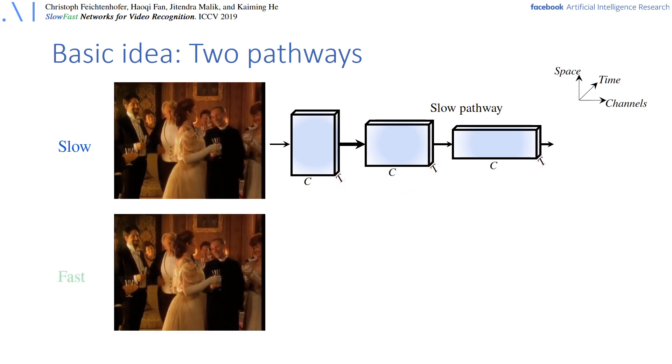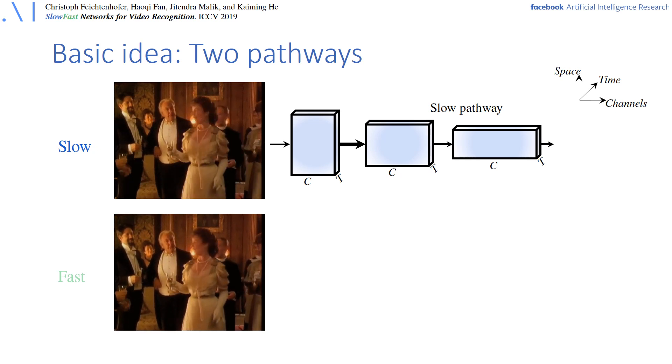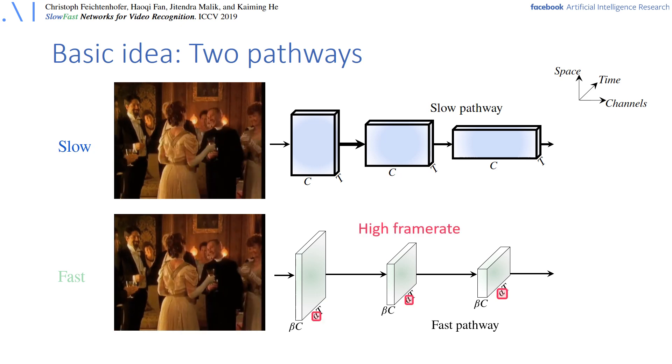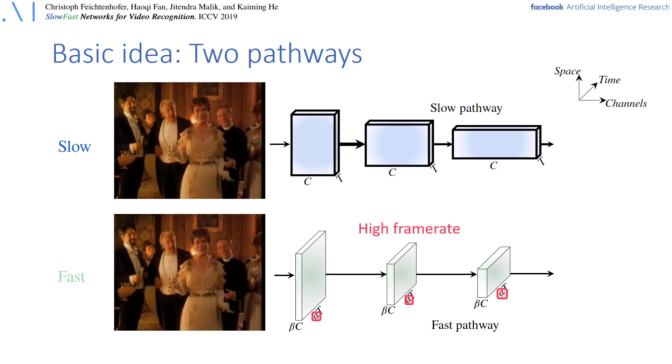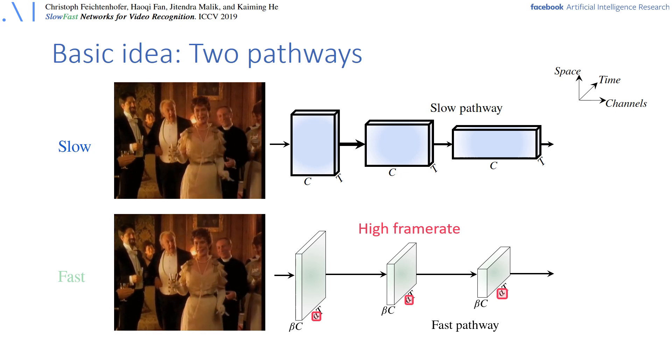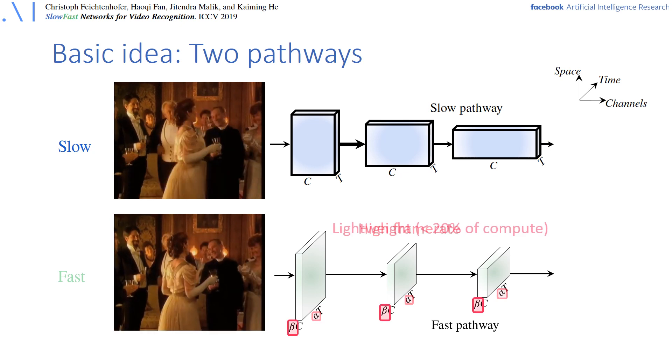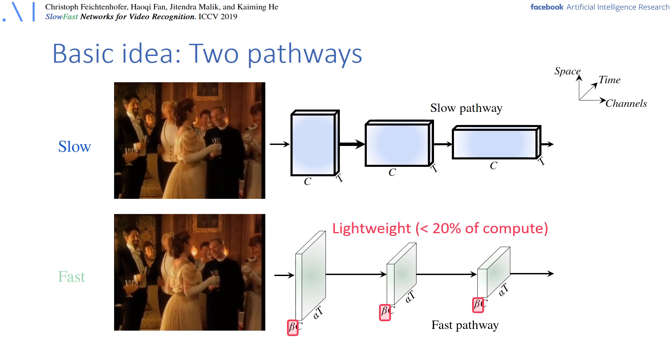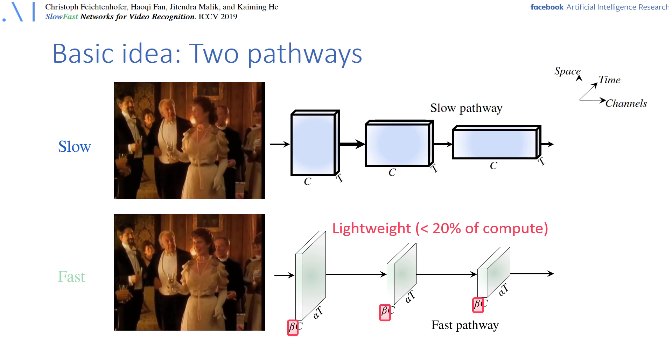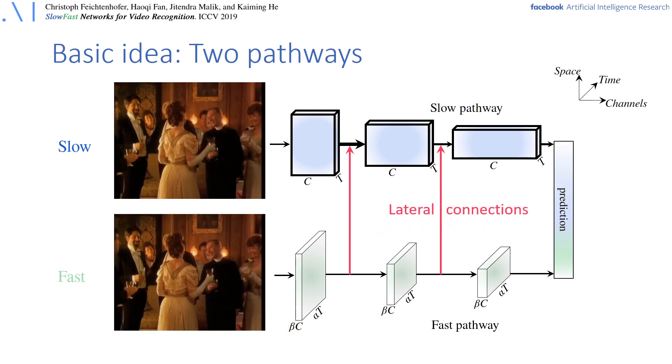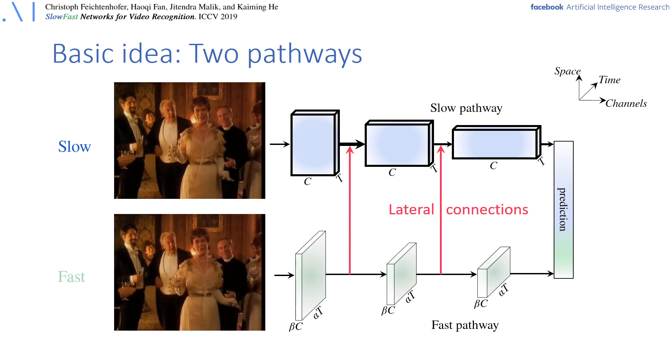In contrast, the fast pathway is responsible for capturing rapid motion by operating at alpha times higher frame rate. Despite its higher temporal resolution and frame rate, this pathway is very lightweight with only just 20% of the overall computational cost by having beta times less feature channels, in analogy to the magno-parvo ratio. Two pathways are fused by lateral connections between them.